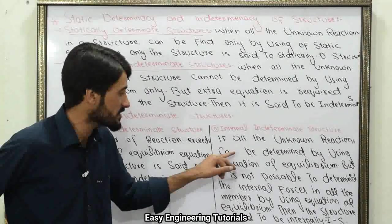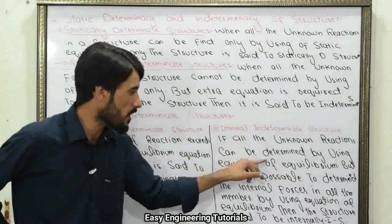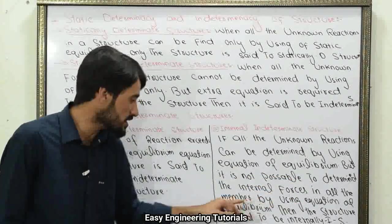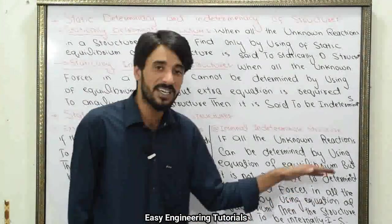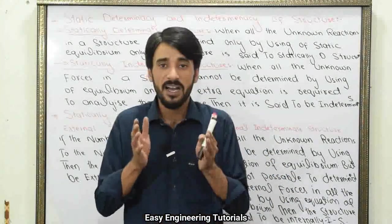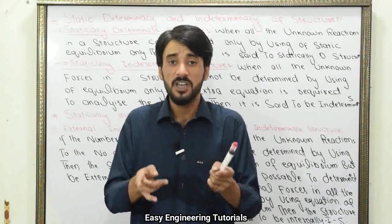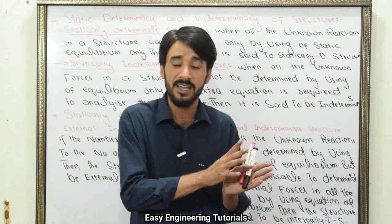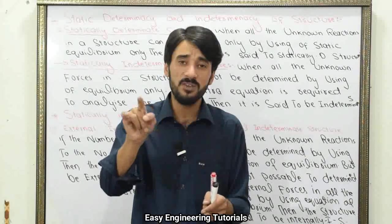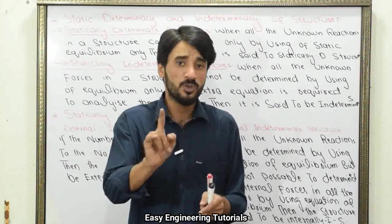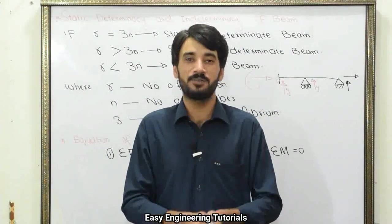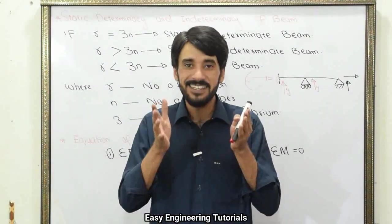What is an internally indeterminate structure? If all the unknown reaction forces can be found by using equations of equilibrium, but it is not possible to determine the internal forces in all the members by using equations of equilibrium, then the structure is said to be internally indeterminate. اگر external unknown reactions equation of equilibrium سے پائن ہو جائیں مگر internal members کے unknown reactions equation of equilibrium سے پائن نہ ہو سکیں تو اس قسم کے structure کو internally indeterminate structure کہیں گے۔